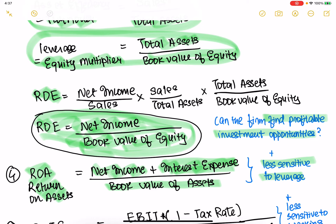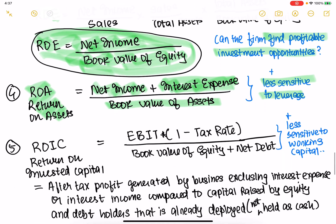But again, if you want to look at leverage specifically, then you want to look at return on equity. ROIC is the fifth measure, which is less sensitive to leverage and also less sensitive to working capital. If your receivables and payables go up, then your total assets go up and ROA becomes a little more sensitive — but ROIC, return on invested capital, is even less sensitive to working capital.